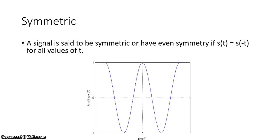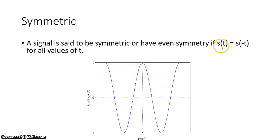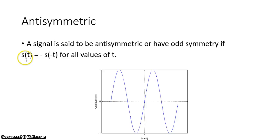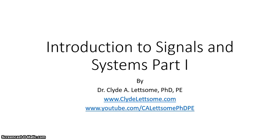We have just a couple more concepts: symmetric signals and anti-symmetric signals. A symmetric signal means that s(t) = s(−t) — if we look on both sides of the zero line, we get the exact same values; for example, s(5) = s(−5). An anti-symmetric signal is defined as s(t) = −s(−t). That was an introduction to signals and systems, part one — please check for part two. Thank you.